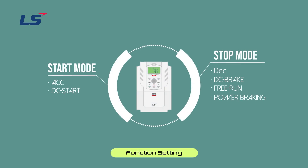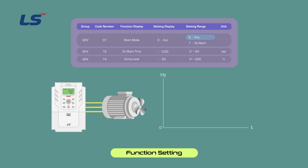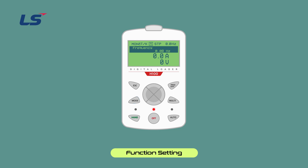Let's learn about startup method settings. ACC acceleration starting method is a general acceleration method. If there is no separate function selection, when the operation command is input, the acceleration time is reflected and the acceleration reaches the target frequency. In ADV7 start mode, select and set ACC, which is 0.